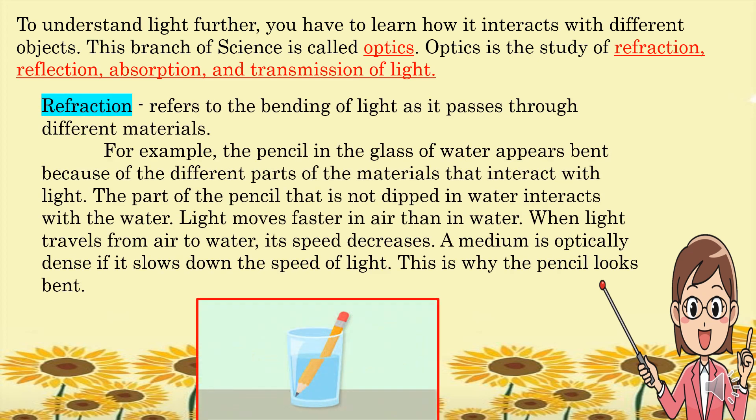Refraction refers to the bending of light as it passes through different materials. For example, a pencil in a glass of water appears bent because of the different materials that interact with light. Light moves faster in air than in water. When light travels from air to water, its speed decreases. A medium is optically dense if it slows down the speed of light. This is why the pencil looks bent.